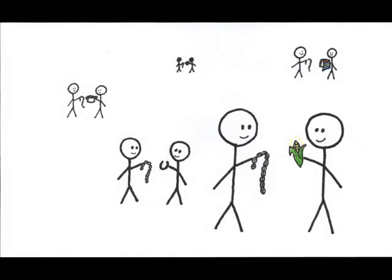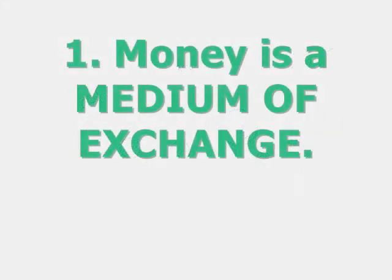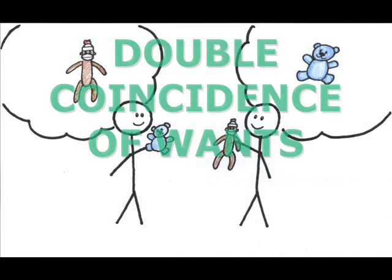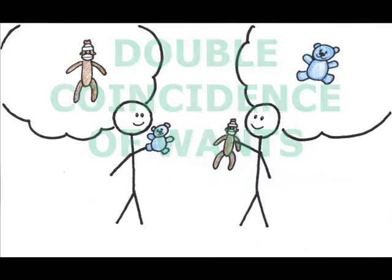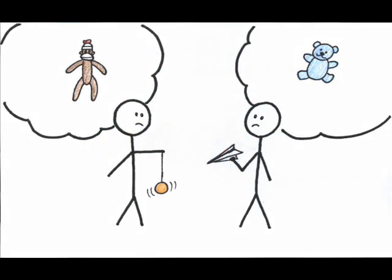To serve well as money, there are three basic functions of money that must be fulfilled. One, money serves as a medium of exchange. Without money, we would have to barter or trade, and transactions become much more difficult. A barter works fine when there's a double coincidence of wants — you have something I want, and I have something you want — but if we don't, transactions become much more complex.